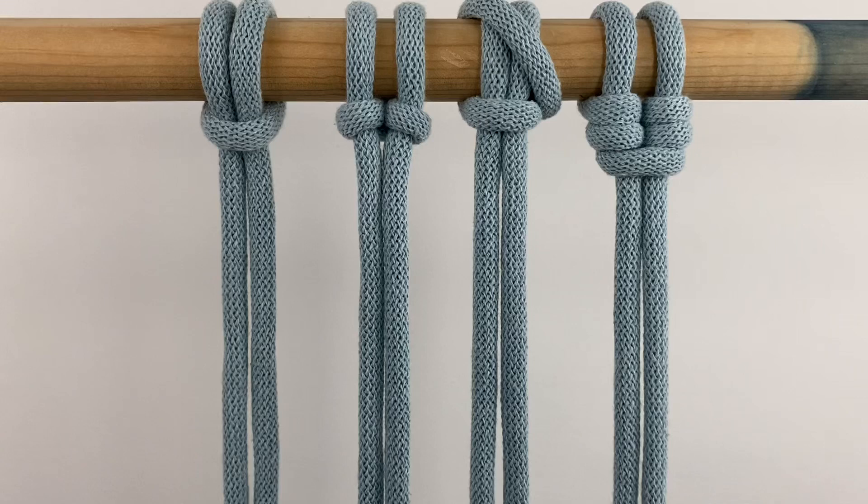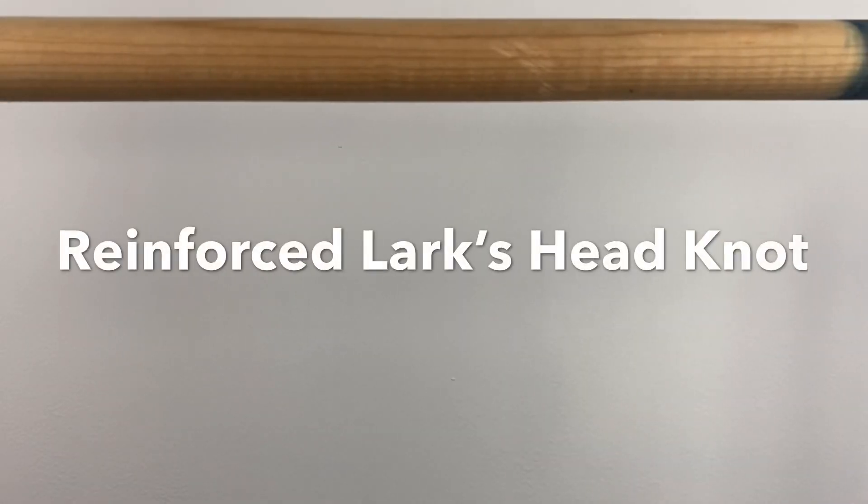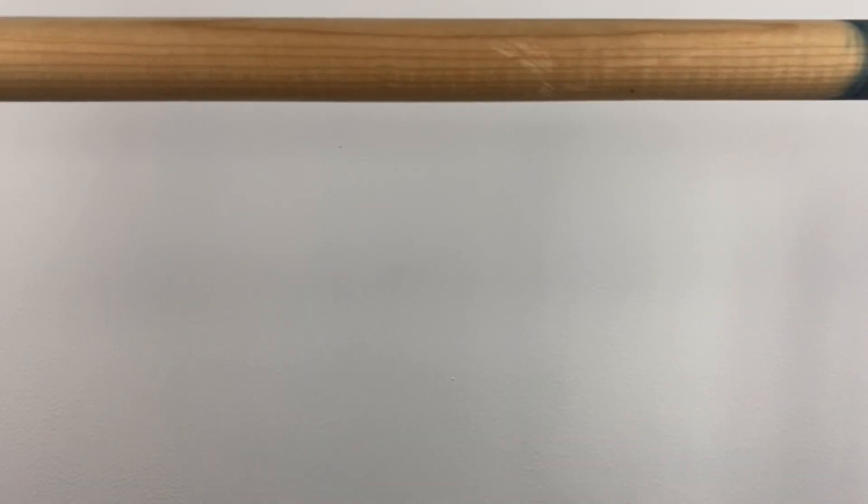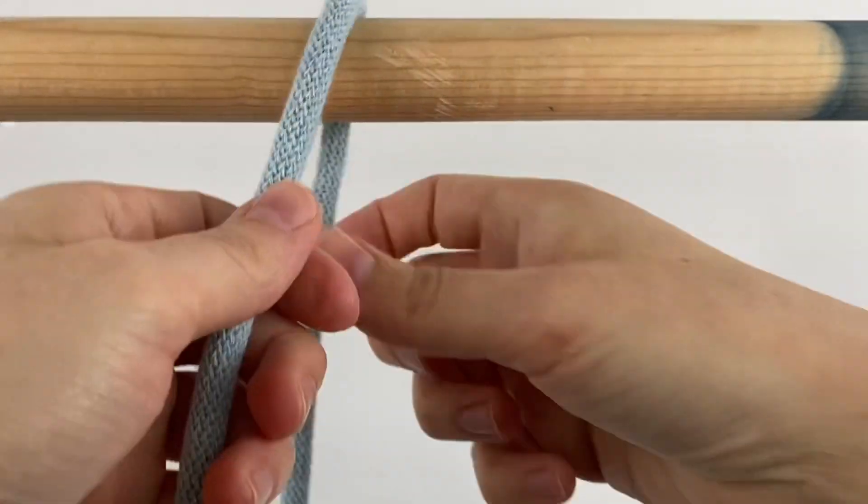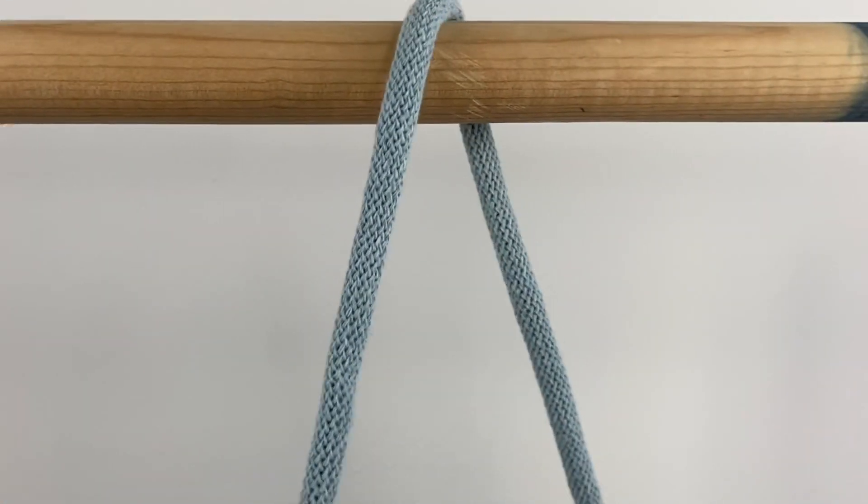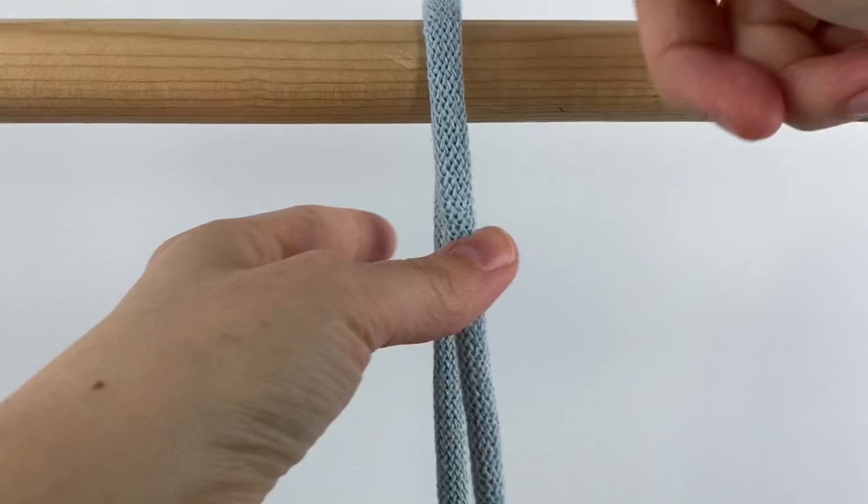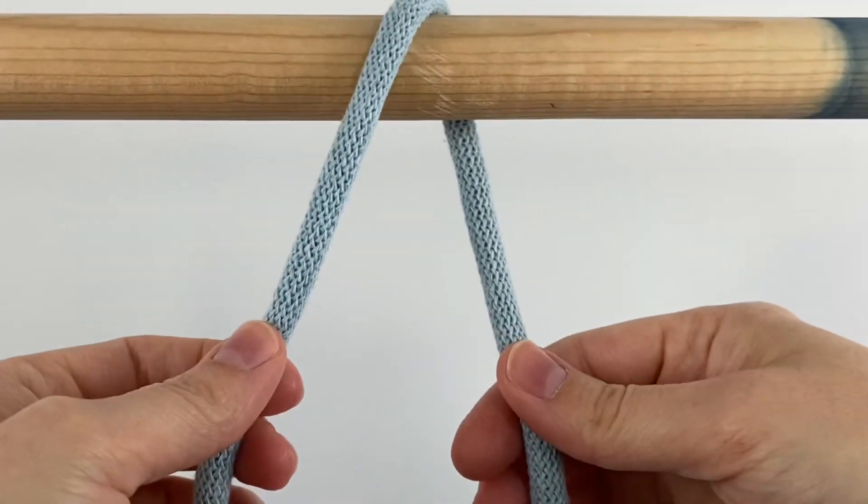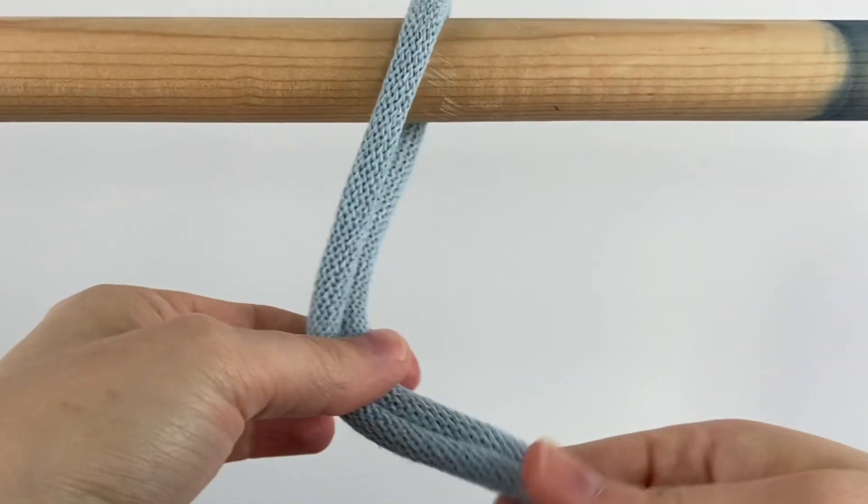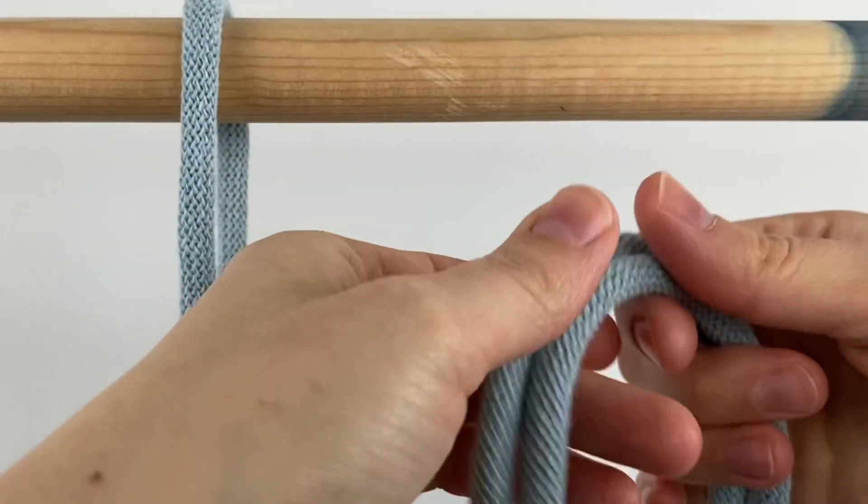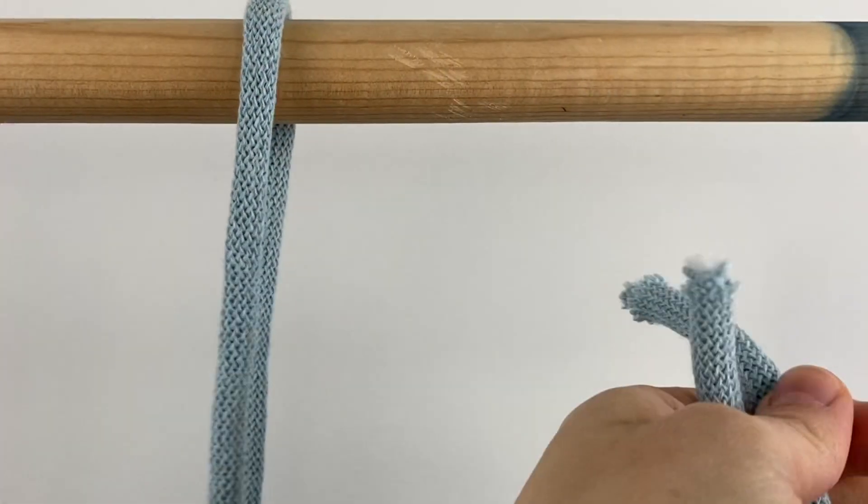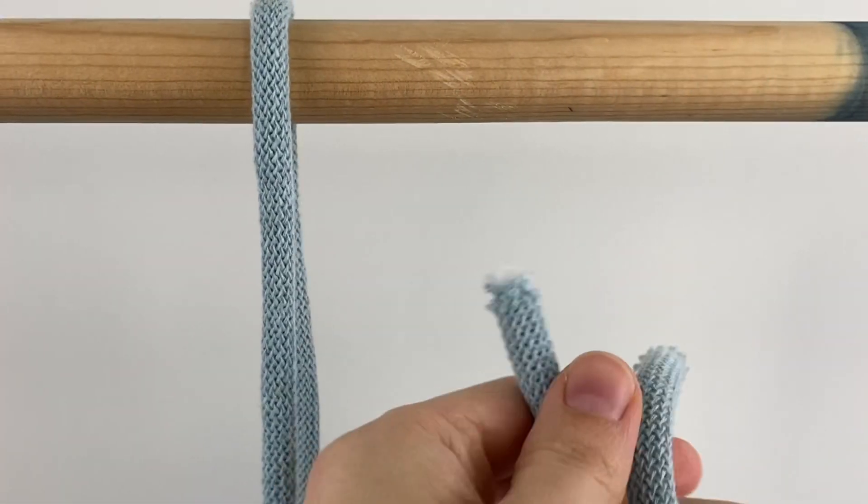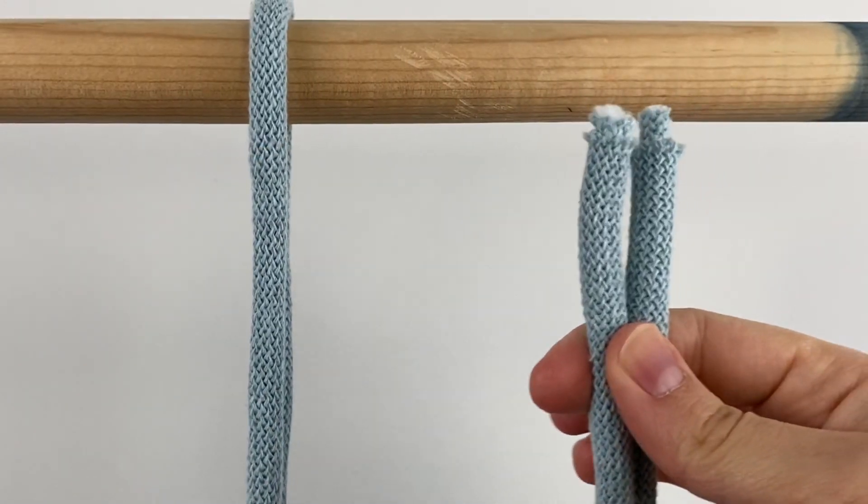So let me just show you how to tie these. First we're going to do the reinforced larks head knot. You're going to take your cord, fold it in half, and drape it over your dowel so it's just hanging with right in the middle where it's folded in half. Then take your ends and you're going to fold your two ends which, let me show you how they look here, so you have your two ends meet up here at the bottom.